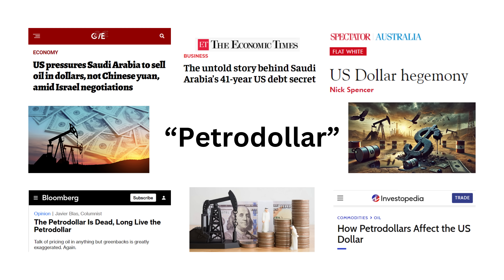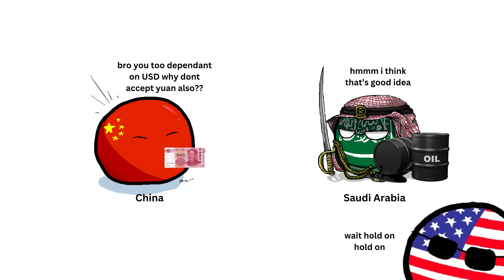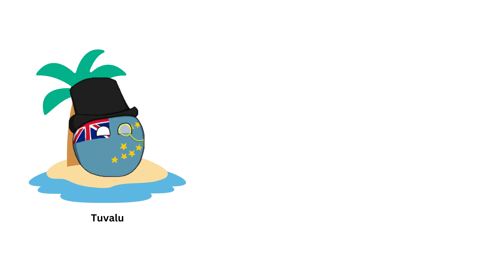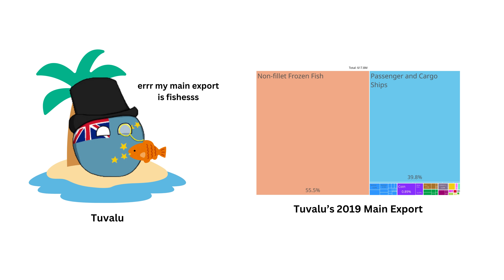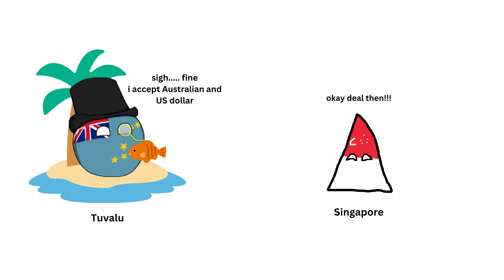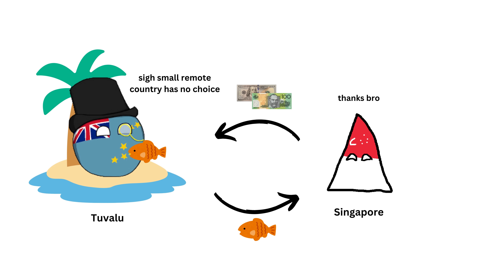This is known as the petrodollar. Even though there's a rumor that Saudi Arabia is trying to accept other currencies also — I can make another video about it if you want. On the other hand, small island nations in the Pacific, like Tuvalu, don't have much to export, so their local currencies aren't widely used. Instead, they use stronger currencies like the U.S. dollar or Australian dollar to make trade easier.